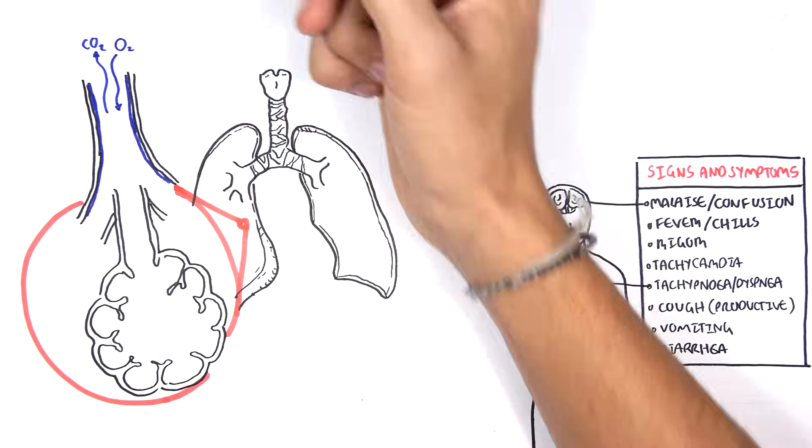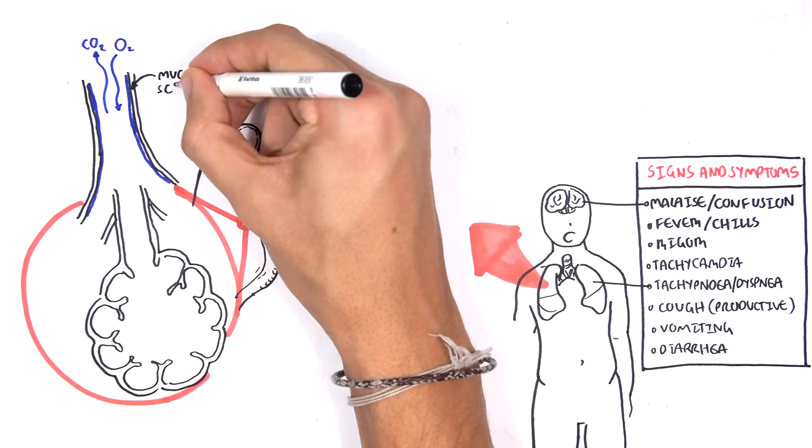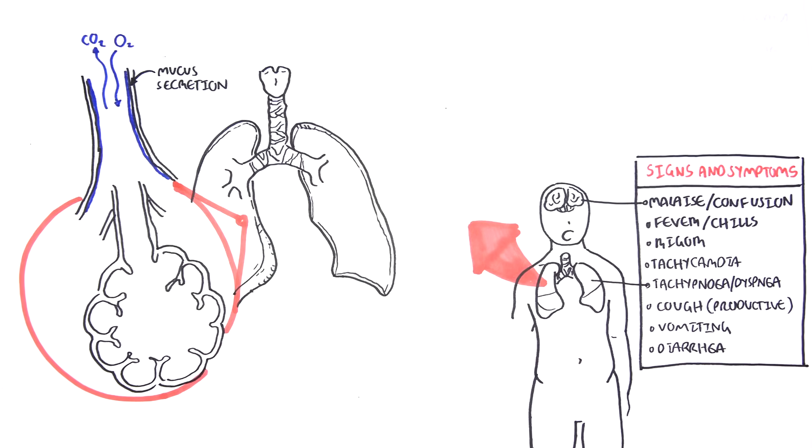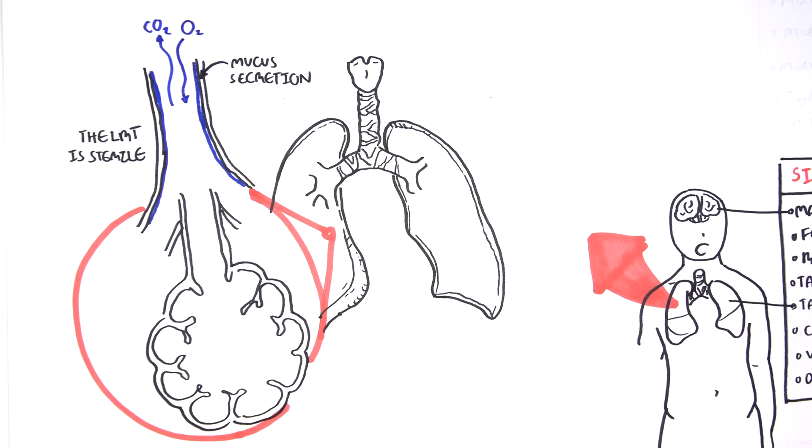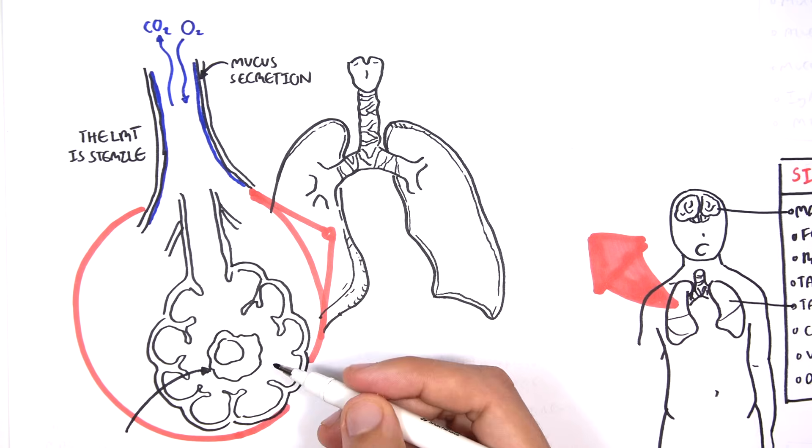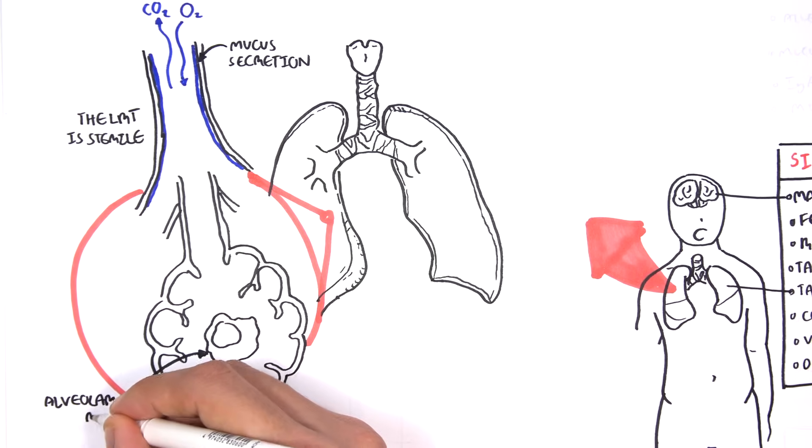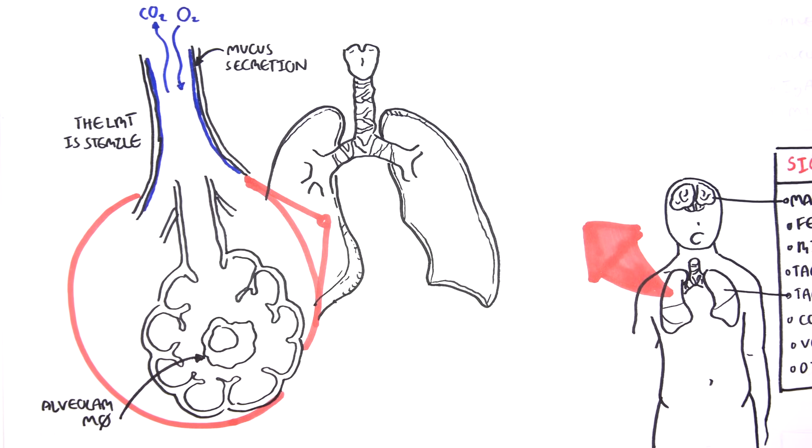There is mucus lining the bronchioles. The lower respiratory tract is sterile to commensal organisms as well as any organisms. We do have microorganisms residing in the upper respiratory tract, however.